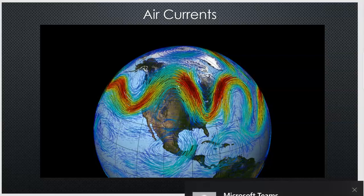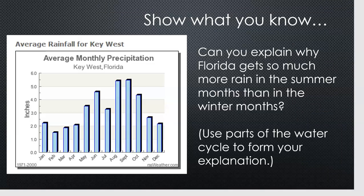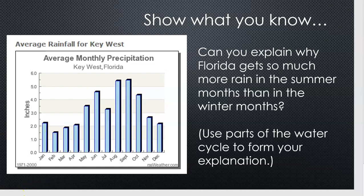Now let's give you an opportunity to show what you know. Here we have a chart showing average monthly precipitation — the amount of rain that Key West gets every year. On the y-axis is the amount of rain measured in inches, and on the x-axis are the months. It's probably not surprising that June, August, and September are heavy precipitation months. I'd like you to explain why Florida gets so much more rain in the summer months than in the winter months, using vocabulary from the water cycle and from our discussion of air currents and ocean currents. Here's your chance to show what you know — good luck!